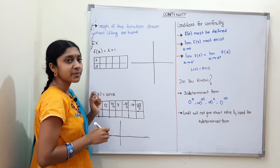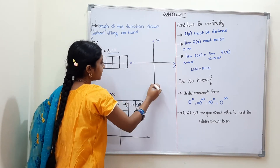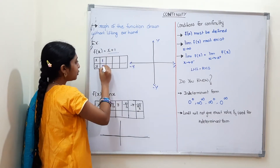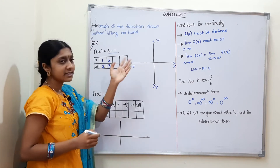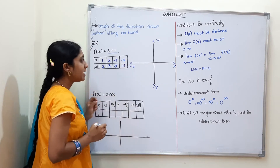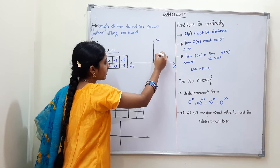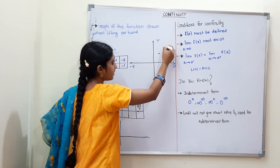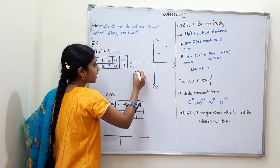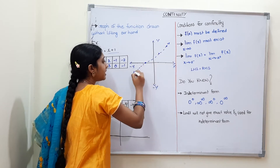The first example is f(x) = x + 1. This is our function. If we plot a graph, we have the y-axis and x-axis, the negative x-axis and negative y-axis. For example, when x = 1, y = 2; when x = 2, y = 3. We also get values like (−1, 0) and (−2, −1). If we join all of these points, we get a straight continuous line.